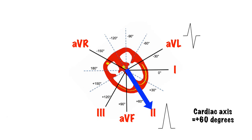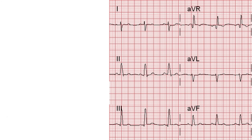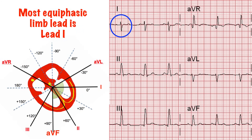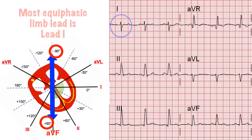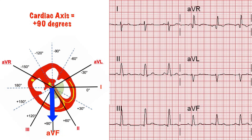Congratulations, you've just worked out the cardiac axis. Let's do that again with the 12-lead ECG. The most equiphasic lead is Lead 1, so the impulse must be travelling at 90 degrees to this, which means either +90 or -90 degrees. Looking at the lead on this vector, Lead AVF, we can see that the impulse is travelling towards it. Therefore, the cardiac axis must be +90 degrees, which is just about normal but close to right axis deviation.